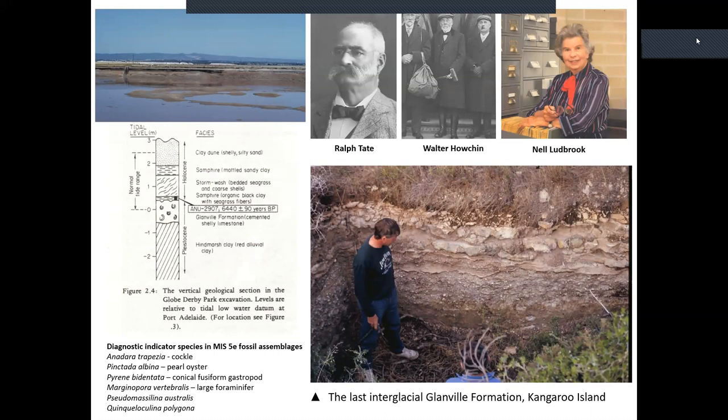You can see Tony Belperio and John Cann — a couple of people I've worked with over the years. This is a classic example of a last interglacial succession, in this case from Kangaroo Island. You can see the calcrete — the result of subaerial exposure pedogenesis — at the top of the succession, and then the shell beds beneath. Quite remarkable. And then Globe Derby Park — this section was measured and published many years ago, resulting from the work of Nell Ludbrook.